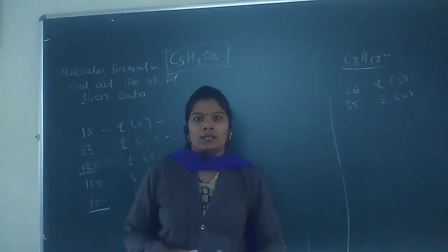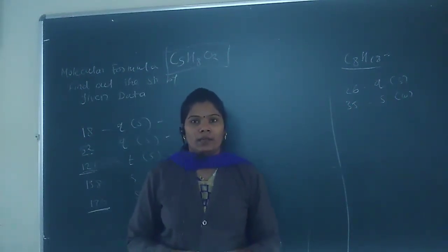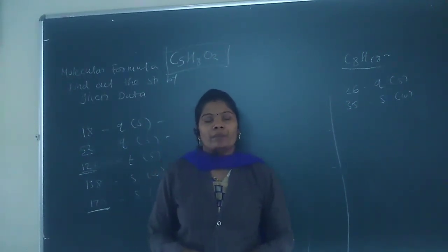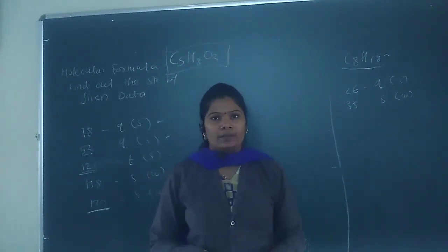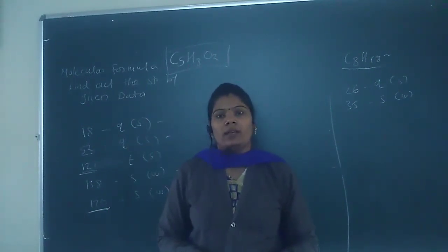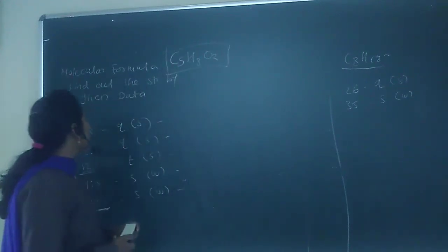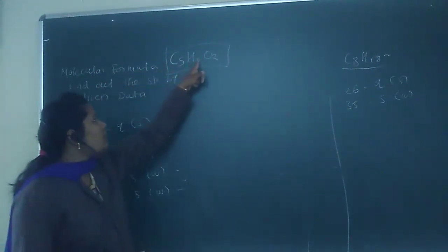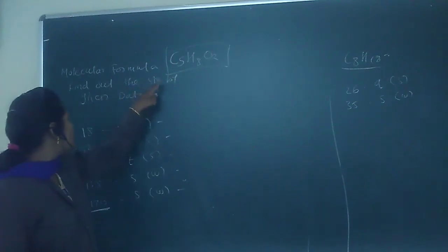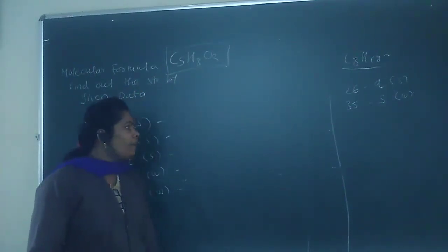Last time we learned about the ATP, DEPT, and INEPT. Today we are going to learn the problems related to carbon-13 NMR. Let's start with the first problem: the molecular formula C5H8O2. Find out the structure of the molecule by the given data.